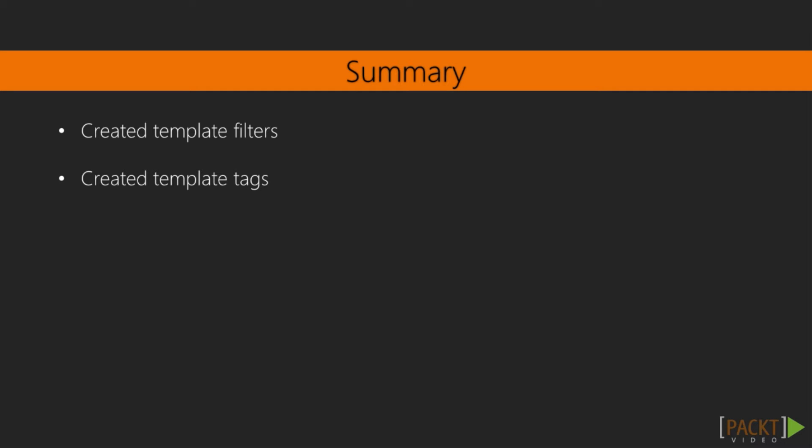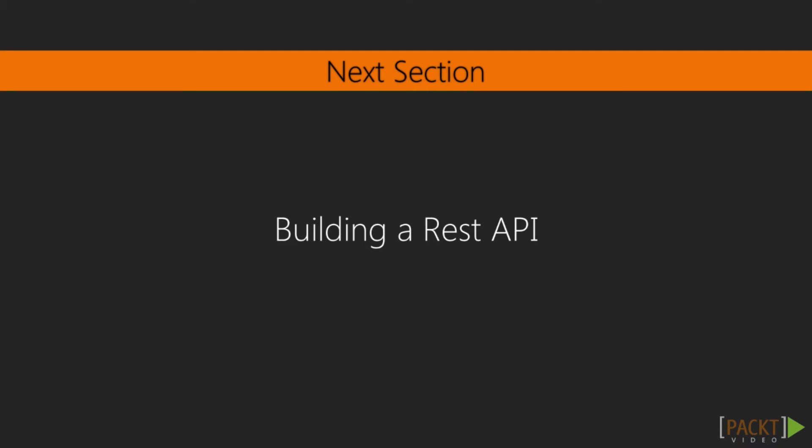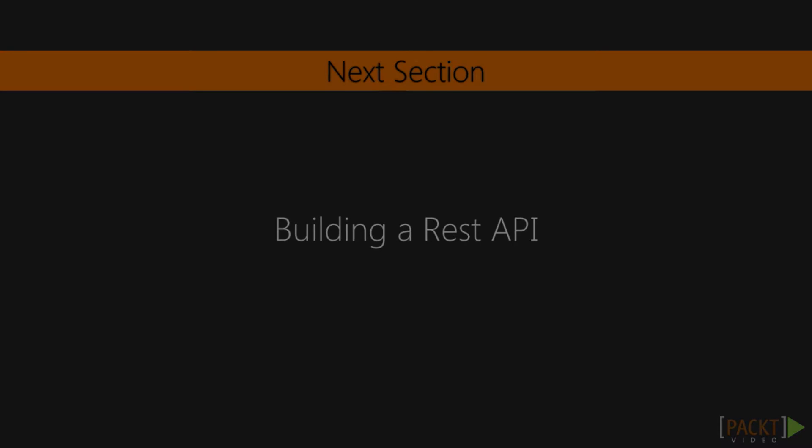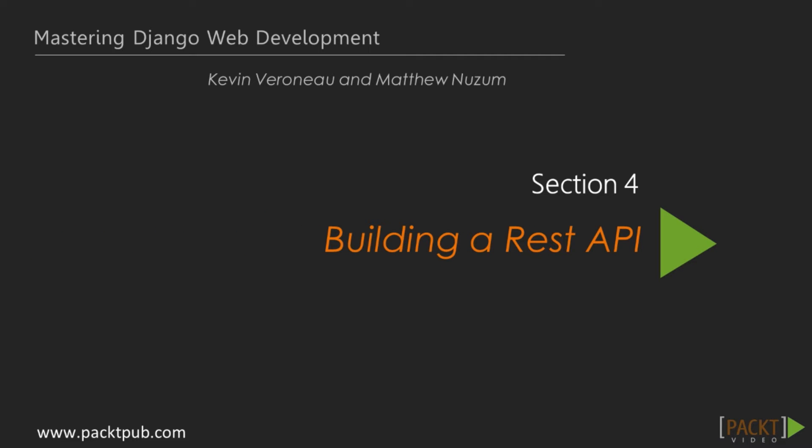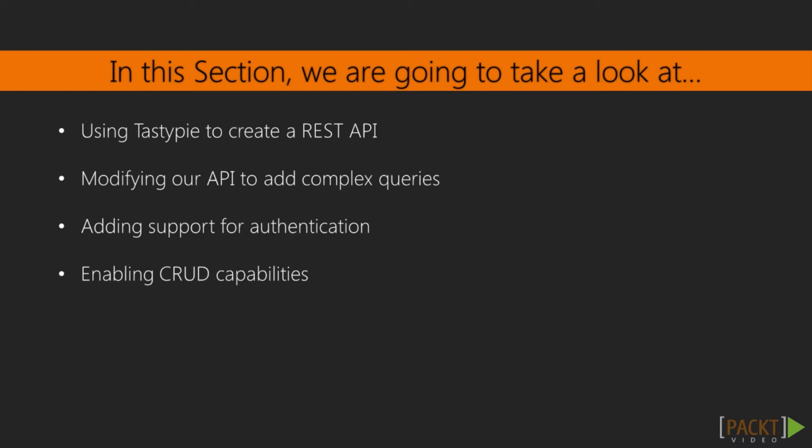That ends this section. We've covered creating our own filters and template tags. In the next section, we'll build a REST API. More and more apps are being built with advanced front-end tools such as AngularJS, Ember, Backbone, and more. These tools access data using REST APIs, usually exchanging data in JSON format. We'll discuss how to easily add a RESTful API to your Django applications.